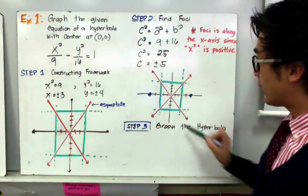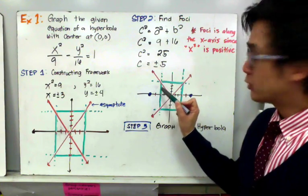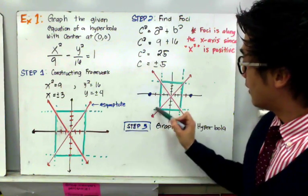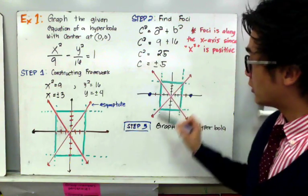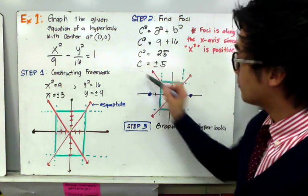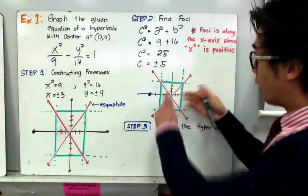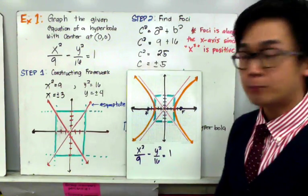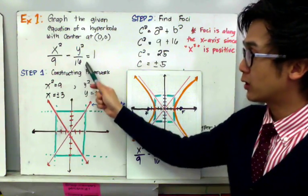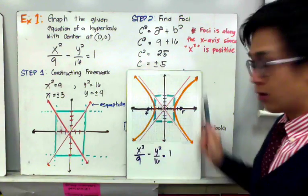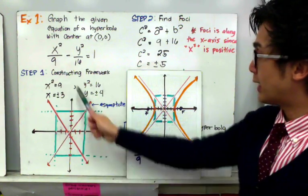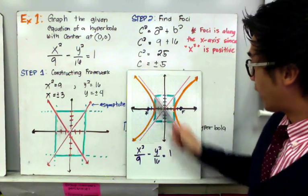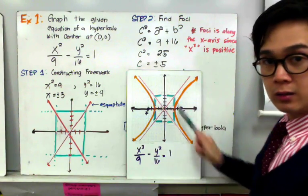Step 3 is to use our framework to graph the hyperbola. From each vertex, draw a curvature ensuring the graph never crosses the asymptotes, producing a hyperbola opening horizontally. The graph of x squared all over 9 minus y squared all over 16 equal to 1 is drawn using these three steps: step 1 — the framework, step 2 — the asymptotes, and step 3 — the hyperbola itself.